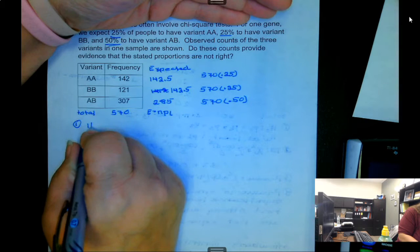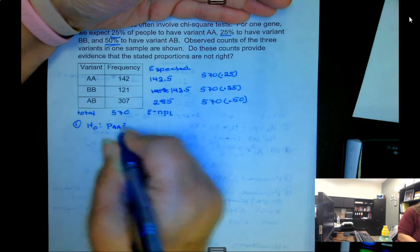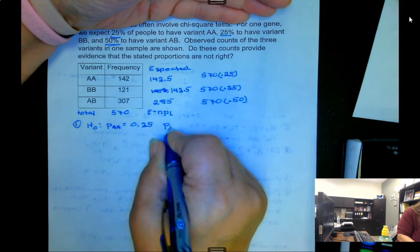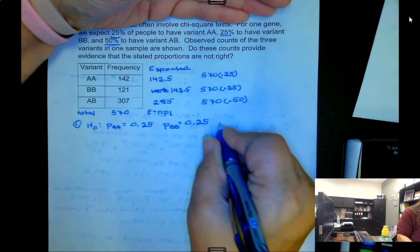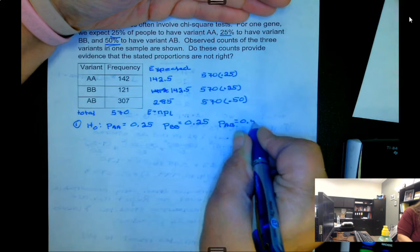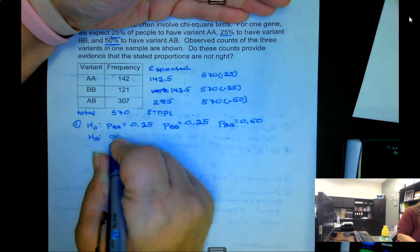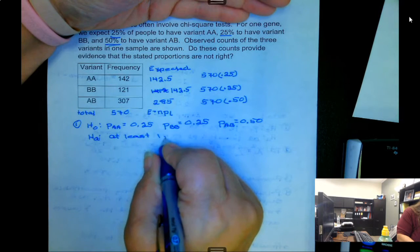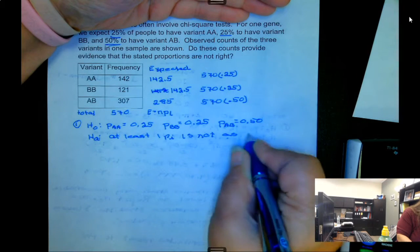So our null hypothesis is that the probability for AA is 0.25, the proportion for BB is 0.25, and the proportion for AB is 0.50. The alternative is at least one p sub i is not as stated.